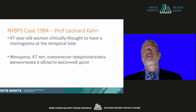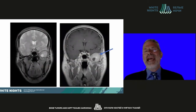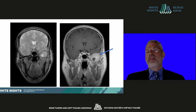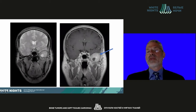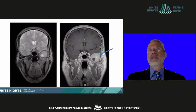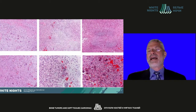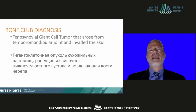This case is again courtesy of Professor Leonard Kahn: a 47-year-old woman clinically thought to have a meningioma at the temporal lobe. On coronal MRI, we see an extra-axial lesion pushing the temporal lobe superiorly — an extrinsic mass growing out of the skull. Adjacent to this lesion inferiorly, we see the temporomandibular joint region. The temporomandibular joint as a source was not initially considered, which is common when tenosynovial giant cell tumor extends out of articulations. The pathology is classic for tenosynovial giant cell tumor, with scattered giant cells visible at the bottom right. The bone club diagnosis is tenosynovial giant cell tumor arising from the temporomandibular joint and invading the skull.